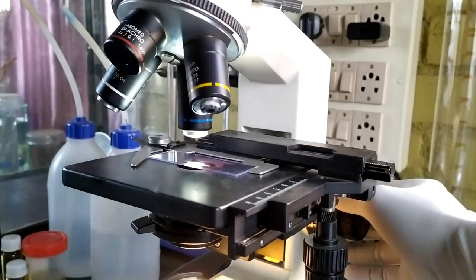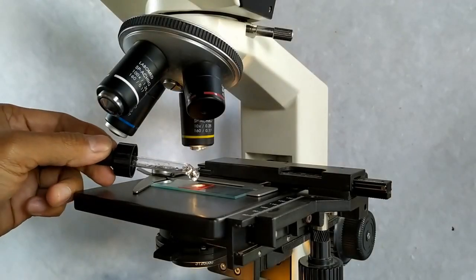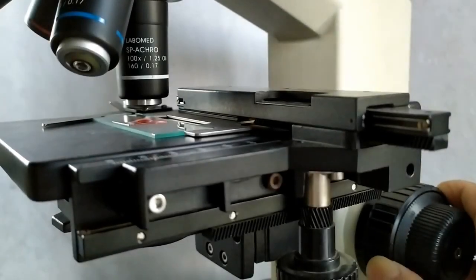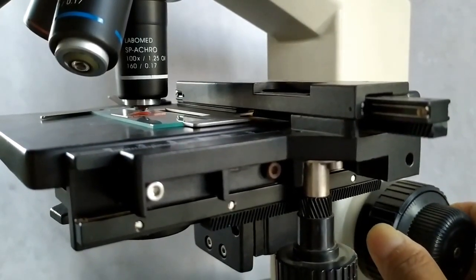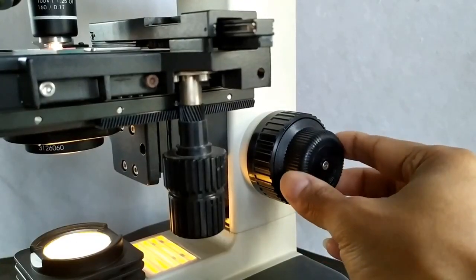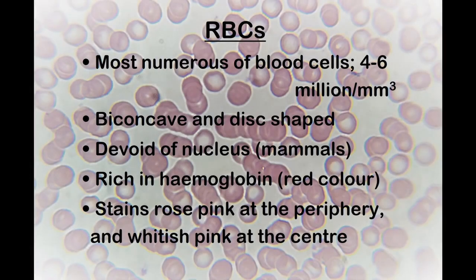Observe and study the various blood cells under 40X and 100X objective. For 100X, place a drop of immersion oil on the slide. Gently lower the 100X objective until it touches the oil surface. Hereon, use the fine adjustment knob for focusing. The following microphotographs show the various cellular components of human blood.